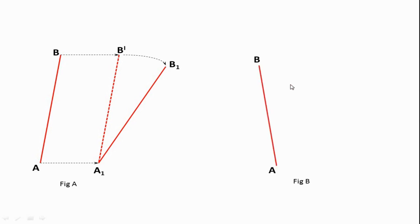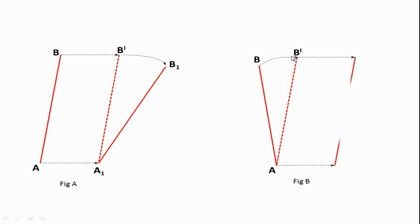In Figure B, link AB is again shown. Here, point B first has circular motion about point A, and the new position of B is B-dash, so AB-dash is a new position. After some time, the link attains position A1 B1. In Figure A, link AB has first a translation motion and then circular motion, while in Figure B, link AB has first circular motion and then linear motion.